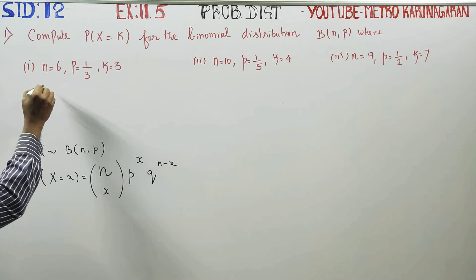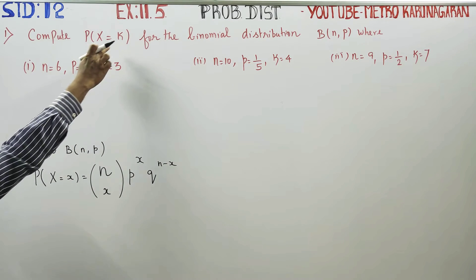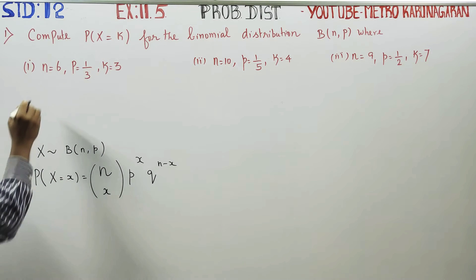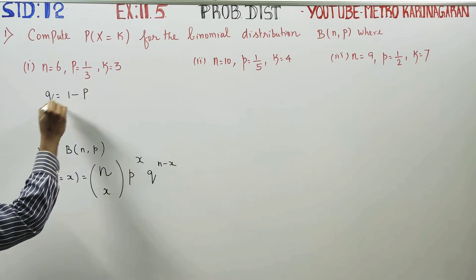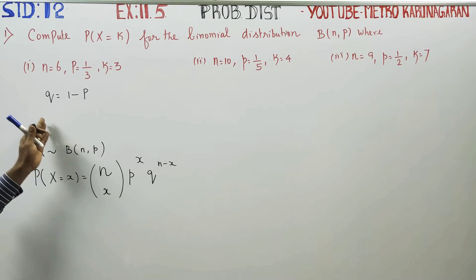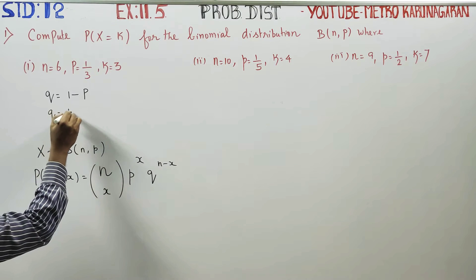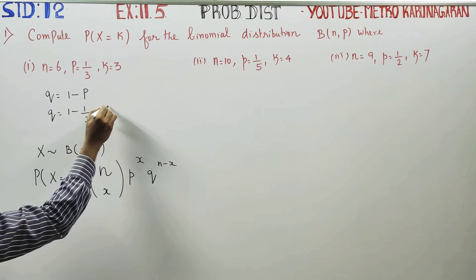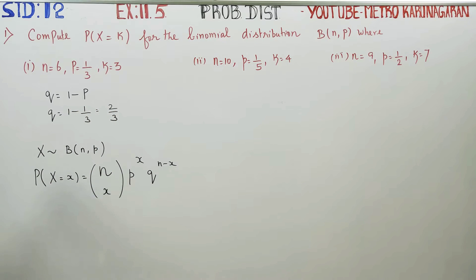Now let's substitute the values: n is equal to 6, p is equal to 1/3, k is equal to 3. What is q? q is the probability of failure, which equals 1 minus p. So q equals 1 minus 1/3, and by LCM your answer will be 2/3.